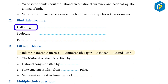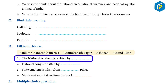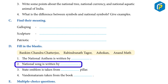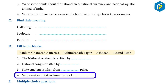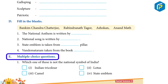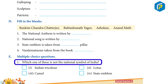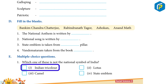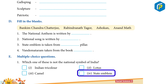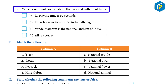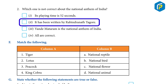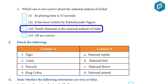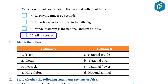Find their meaning: Galloping, Sculptured, Patriotic. Fill in the Blanks: 1. The national anthem is written by ___. 2. National song is written by ___. 3. State emblem is taken from ___. 4. Vande Mataram is taken from the book ___. Multiple Choice Questions: 1. Which one of these is not a national symbol of India? — Indian Tricolor / Lotus / Camel / State Emblem. 2. Which one is not correct about the national anthem of India? — Its playing time is 52 seconds / It was written by Rabindranath Tagore / Vande Mataram is the national anthem of India / All are correct.